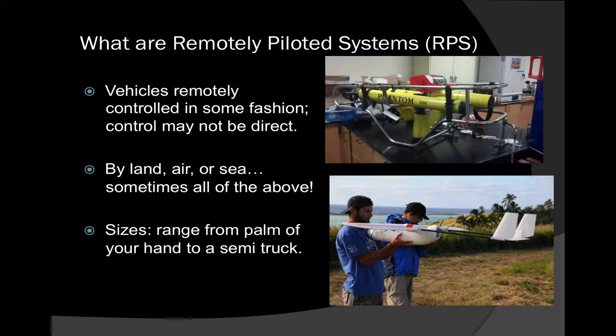If you look around this room, there's actually a little bit of everything. There are airplanes, and inside the locked cabinets we have helicopter-type units. There's an autonomous boat being built right over there, and those guys in the back are submarines. So there are a lot of different kinds, a lot of different flavors of remotely piloted systems. We're going to brush across all of them, but we'll mostly focus on aerial stuff for this class.